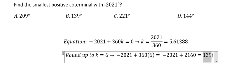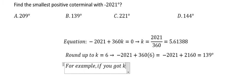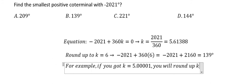And now the final answer is B. In another situation, for example, if you got k equal to 5.001, you will round up k equal to 6. Remember that if you got the number like this, you still round up to k equal to 6 to find the smallest positive co-terminal.